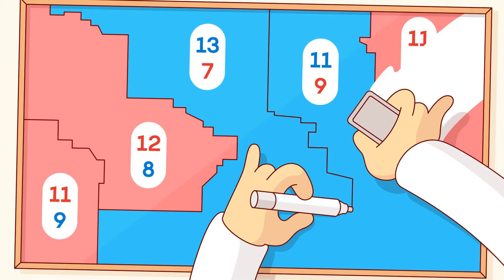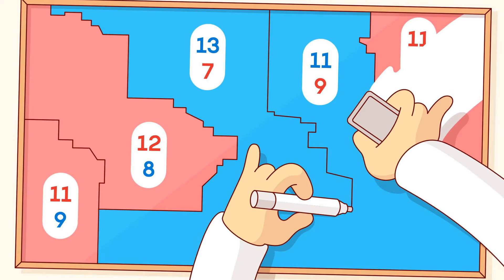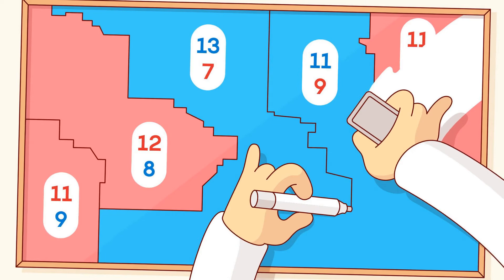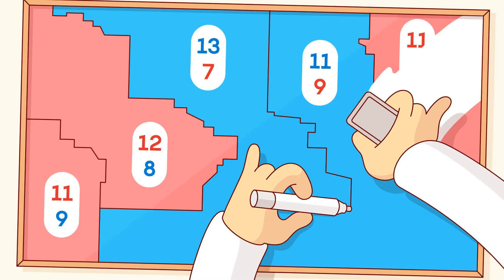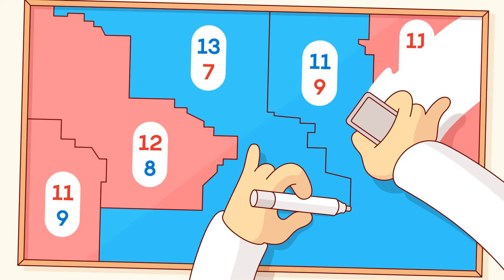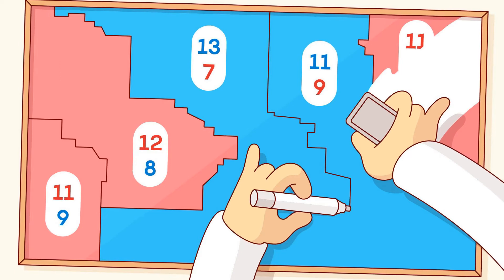So what counts as a wasted vote? Consider California's role in presidential elections. Since 1992, California has always backed the Democratic nominee for president. Therefore, California Republicans know they are almost certainly backing a losing candidate. In some sense their vote is wasted — if they were allowed to vote in a toss-up state like Florida, their vote might make more of a difference. From a Republican perspective, that would be a more efficient use of their vote.